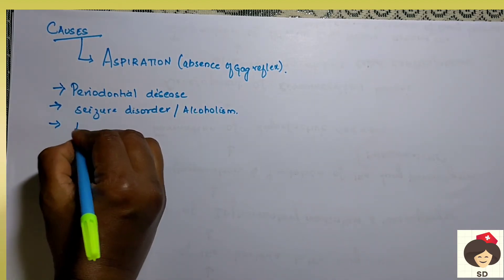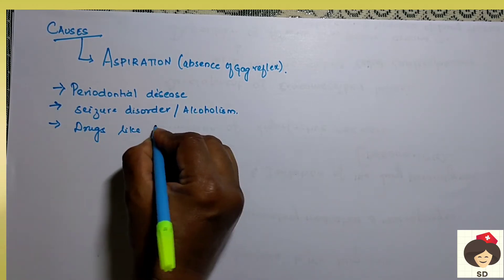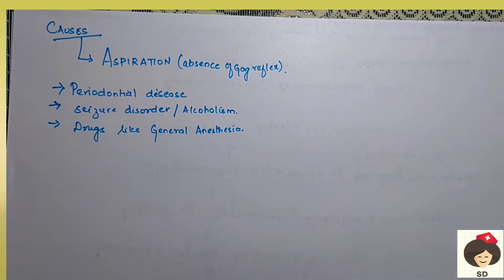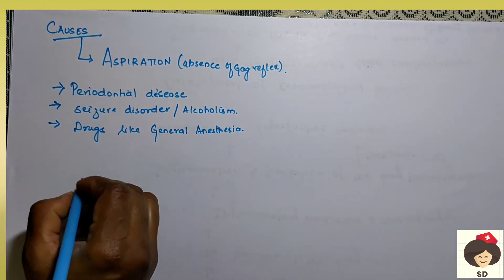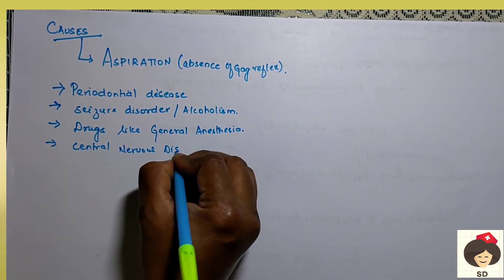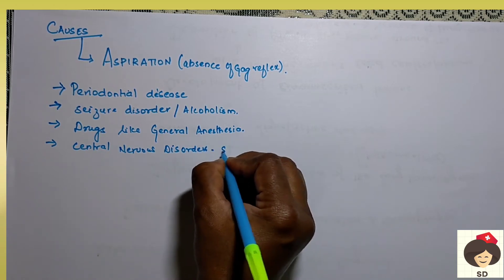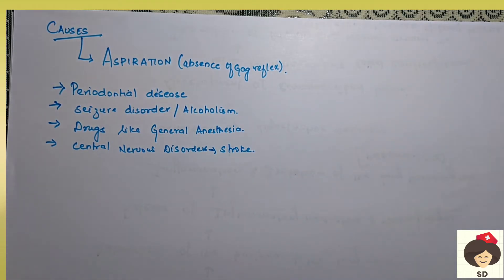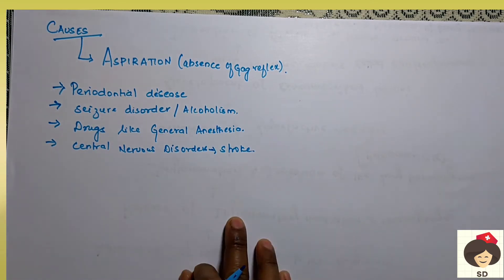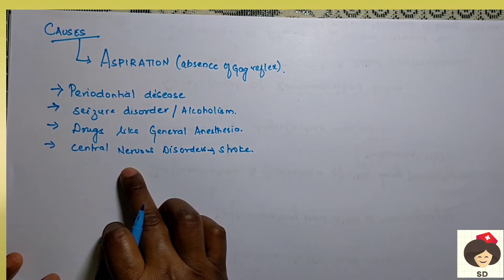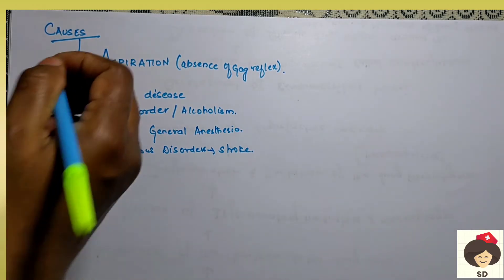A patient taking drugs like general anesthesia can lose consciousness, and at that time the patient can aspirate secretions. Also, CNS — that is central nervous system disorders — like stroke can cause this. Stroke means there is decreased blood supply to the brain, causing the patient to go unconscious and lose the swallowing reflex, thereby aspirating secretions. So any condition where the person is aspirating secretions can lead to lung abscess.